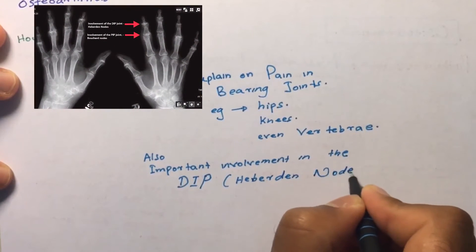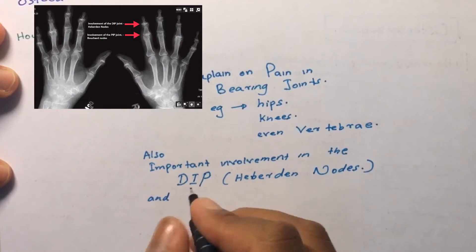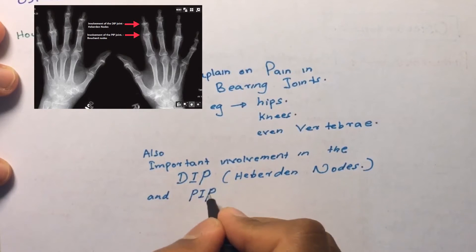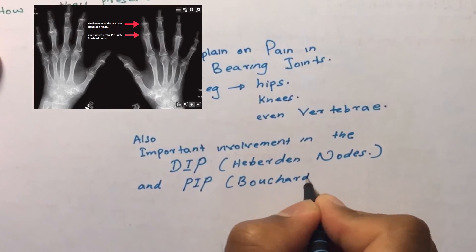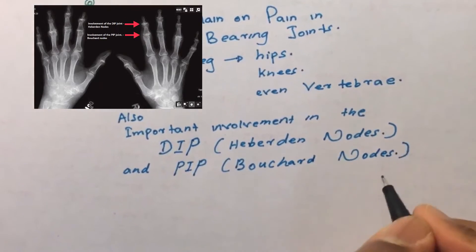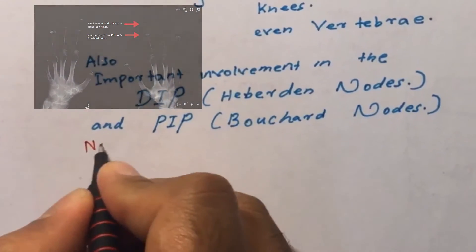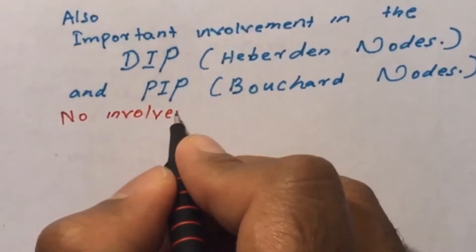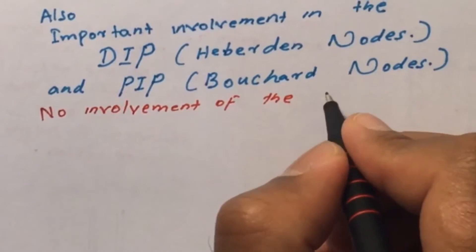Nodular formations at the finger joints have specific names: Heberden nodes at the distal interphalangeal joint and Bouchard nodes at the proximal interphalangeal joint. The most important thing to remember is that there is no involvement of the metacarpophalangeal joint in osteoarthritis.